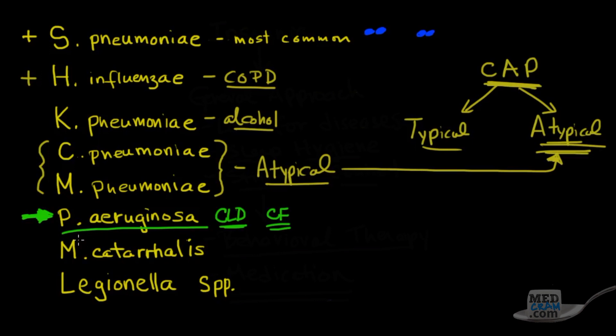Now the reason why you should know about pseudomonas aeruginosa, even though it's not one of those bacteria that's commonly found in CAP, is because of antibiotic resistance. But first, I want you to remember that pseudomonas aeruginosa is typically not seen in community-acquired pneumonia because these are seen in more hospital-acquired or healthcare-acquired pneumonia.